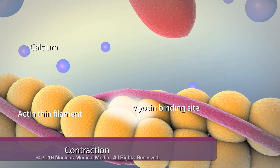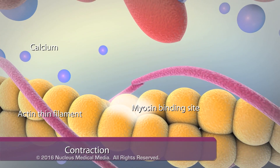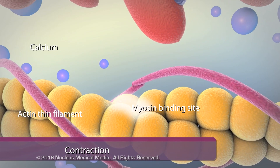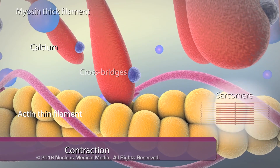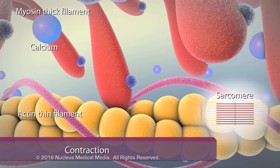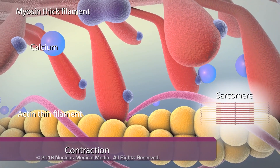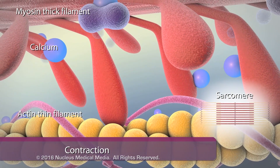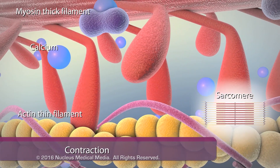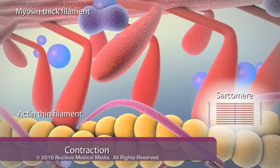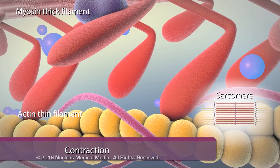In the third step, called contraction, tropomyosin shifts away from actin to expose the myosin binding sites, enabling myosin to bind to actin, resulting in the activation of ATP and the cross-bridges. Released energy causes the myosin heads to rotate and pull the thin filaments inward, sliding past the thick filaments and shortening the sarcomere.